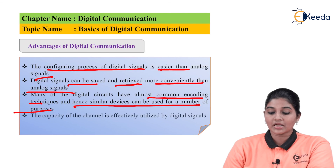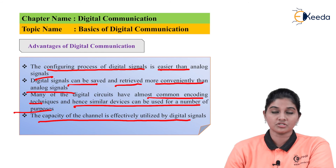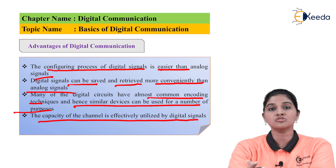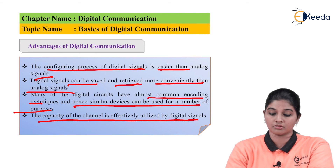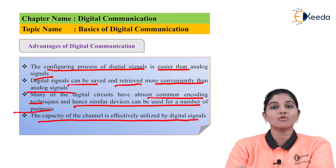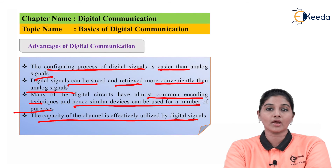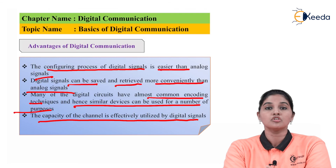The capacity of the channel is effectively utilized by digital signals, as they are transmitted in the form of ones and zeros. It is also very easy to compress digital signals as compared to analog signals. So these are the various advantages provided by the digital system and the need for digital systems.